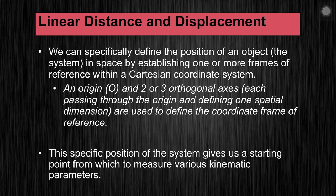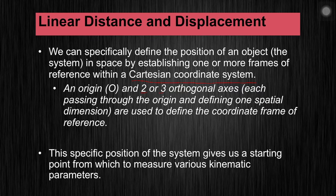We can specifically define the position of an object — the system of interest — in space by using a Cartesian coordinate system. We'll use either a 2D or 3D Cartesian coordinate plane to do so. It's this specific position plotted out on the coordinate system that gives us the starting point from which we can measure various kinematic values.